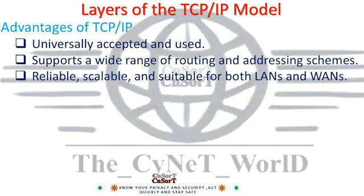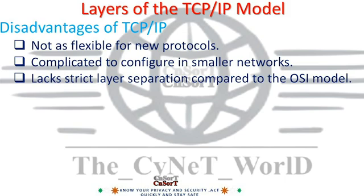Advantages of TCP/IP: universally accepted and used; supports a wide range of routing and addressing schemes; reliable, scalable, and suitable for both LANs and WANs. Disadvantages of TCP/IP: not as flexible for new protocols; complicated to configure in smaller networks; lacks strict layer separation compared to the OSI model.